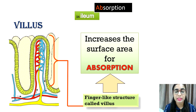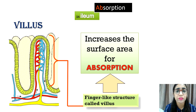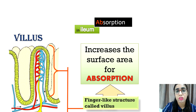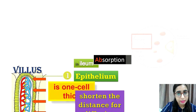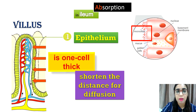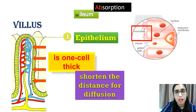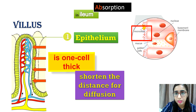Let's look into the villus adaptations that increase the surface area for absorption of digested food. The villus has three major parts: the epithelium, the blood capillaries, and the lacteal. The epithelial cells of the villus are very thin — about one cell thick — which increases the absorption process. There are also many tiny projections called microvilli on the epithelial cells, as you can see in the picture.